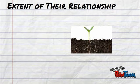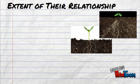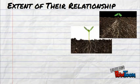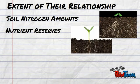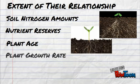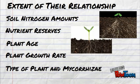The extent of the symbiotic relationship of mycorrhizae and plants is determined by a few main factors: soil nitrogen amounts, nutrient reserves in the plant, plant age, plant growth rate, and the type of plant and mycorrhizae involved.